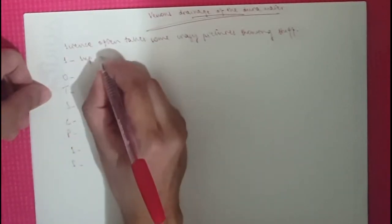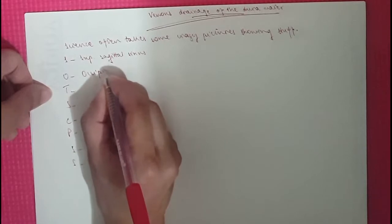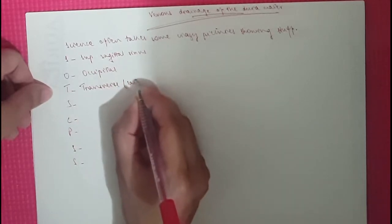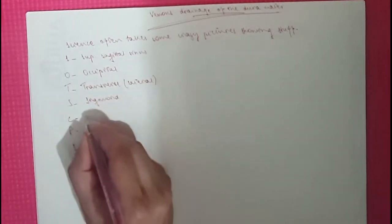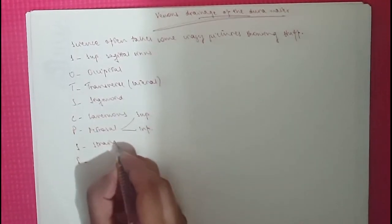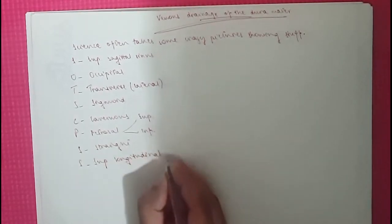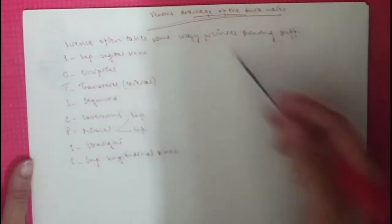So you've got the superior sagittal sinus. You've got the occipital sinus, the transverse, also the lateral if you want. You've got the sigmoid. You've got the cavernous. The petrosal which has got the superior and the inferior petrosal. Then you've got the straight sinus and the superior longitudinal sinus. And there's a confluence of the sinuses. That means like a merging of two or three sinuses.